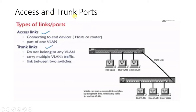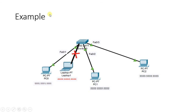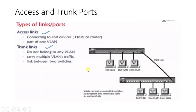We will provide port security so that no device other than the learned MAC addresses can access the switch port. There are two different types of ports: access and trunk ports. Access links are connected to end devices. In a two-floor switch setup, access ports connect directly to PCs, while two switches are connected through a trunk port. We will be using access ports in this hands-on session.